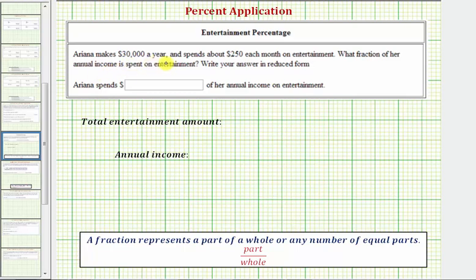Ariana makes $30,000 a year and spends about $250 each month on entertainment. We want to determine what fraction of her annual income is spent on entertainment.